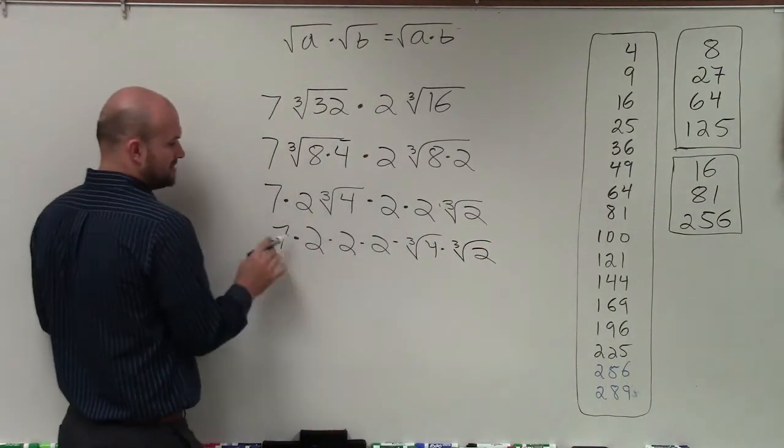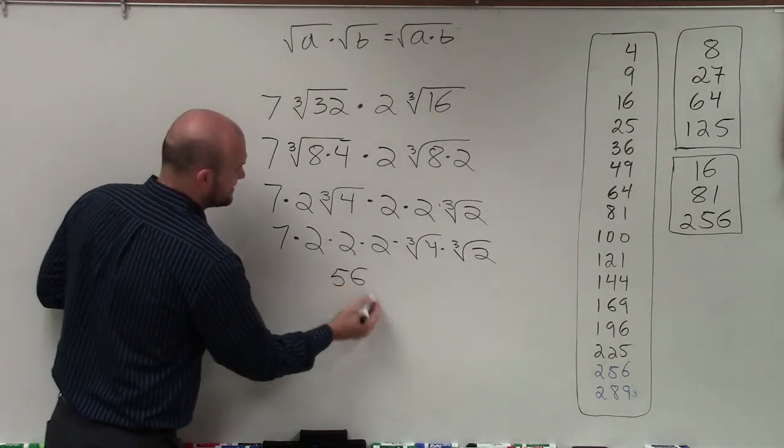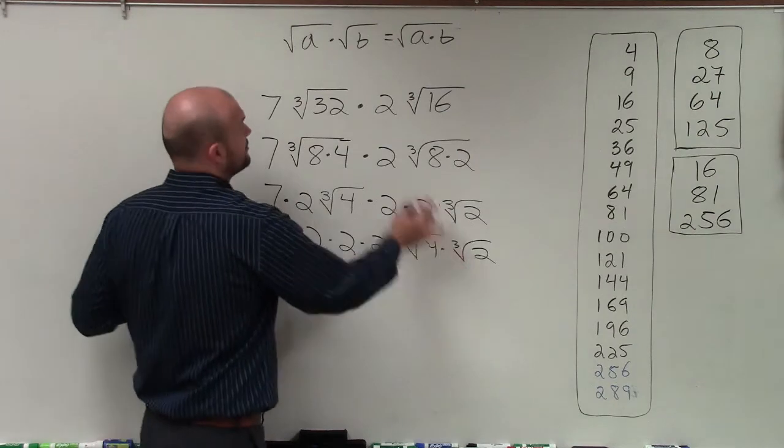Multiplying all these numbers here, I have 2 times 2 times 2 is 8, times 7 is 56. Then the cube root of 4 times the cube root of 2.